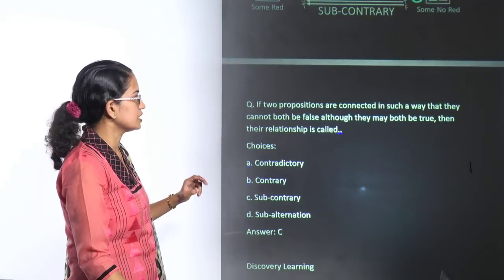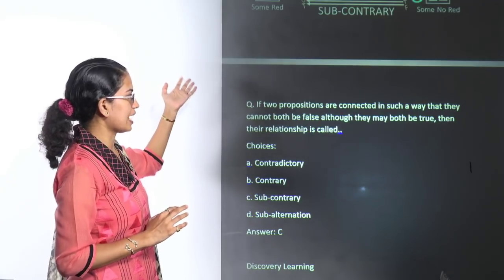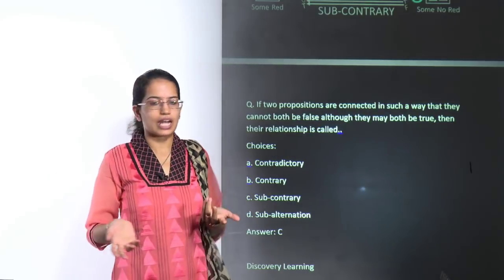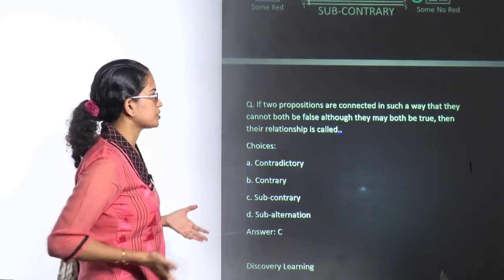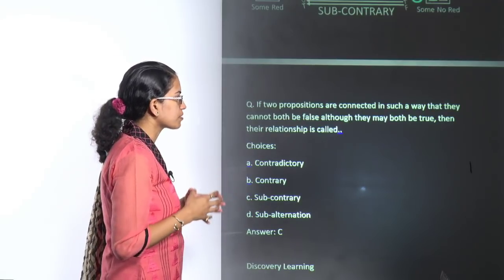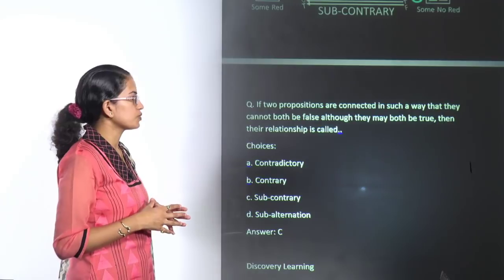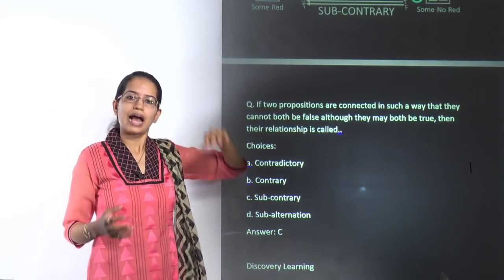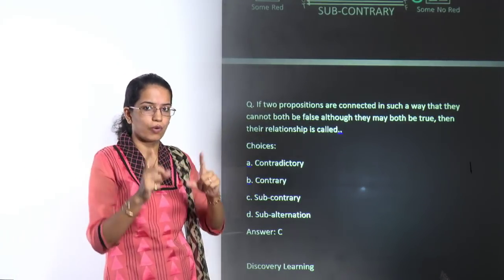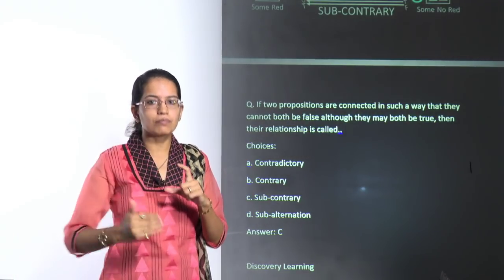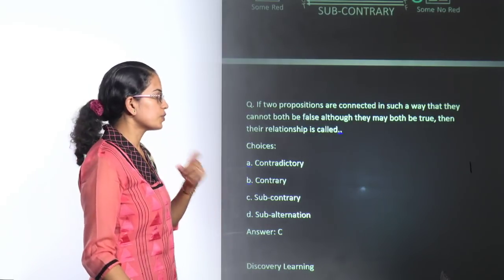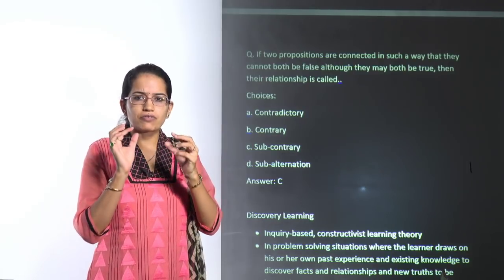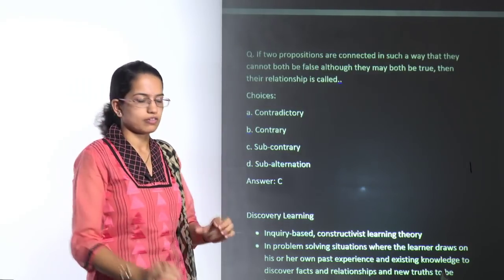The next question again asks about the same concept. It's a direct question: if two propositions are connected such that both cannot be false although they may both be true, what kind of relationship is it? This is a subcontrary relationship, and it is a very important type of question in square of opposition.